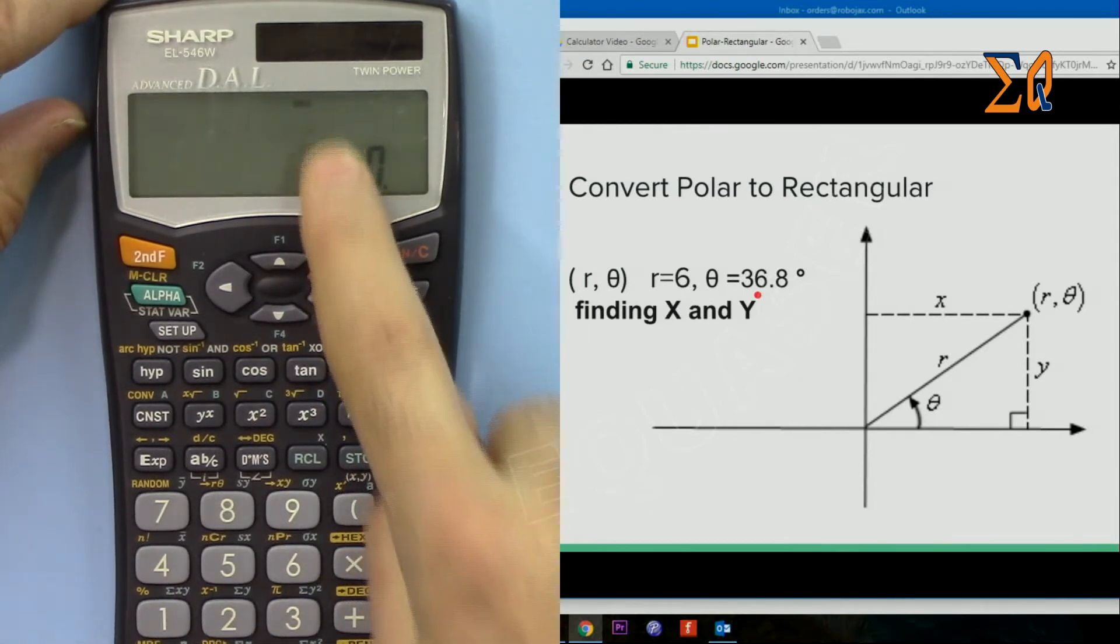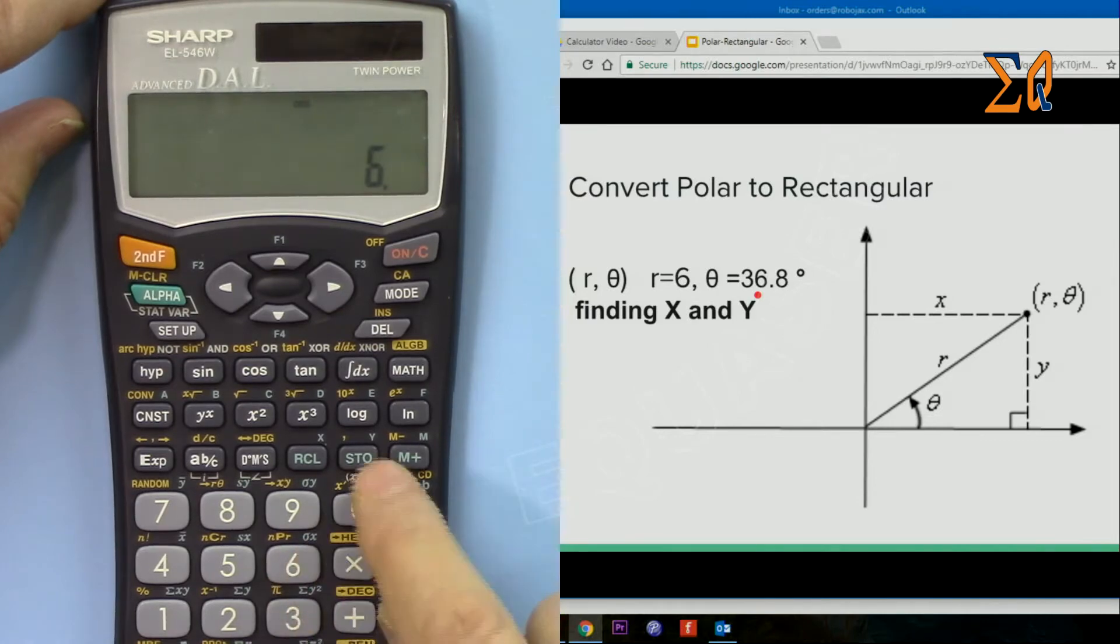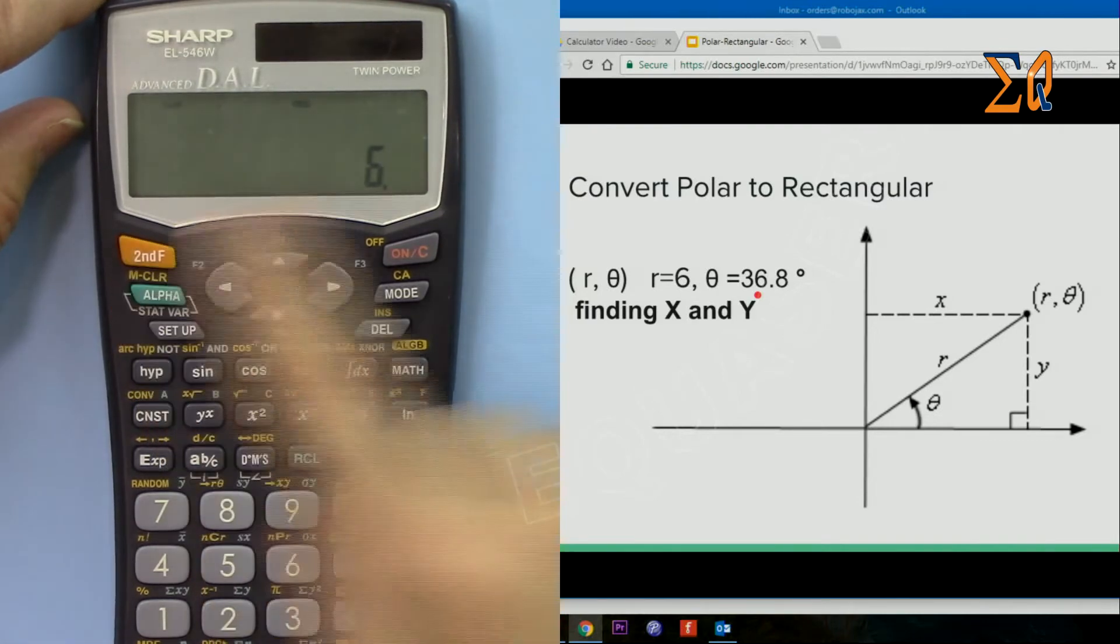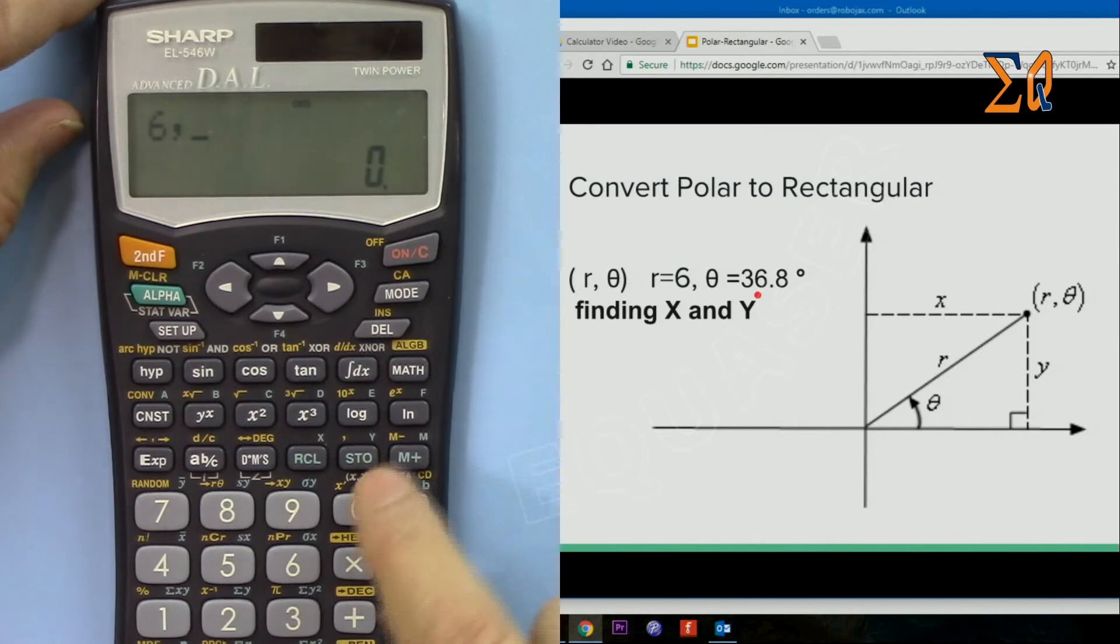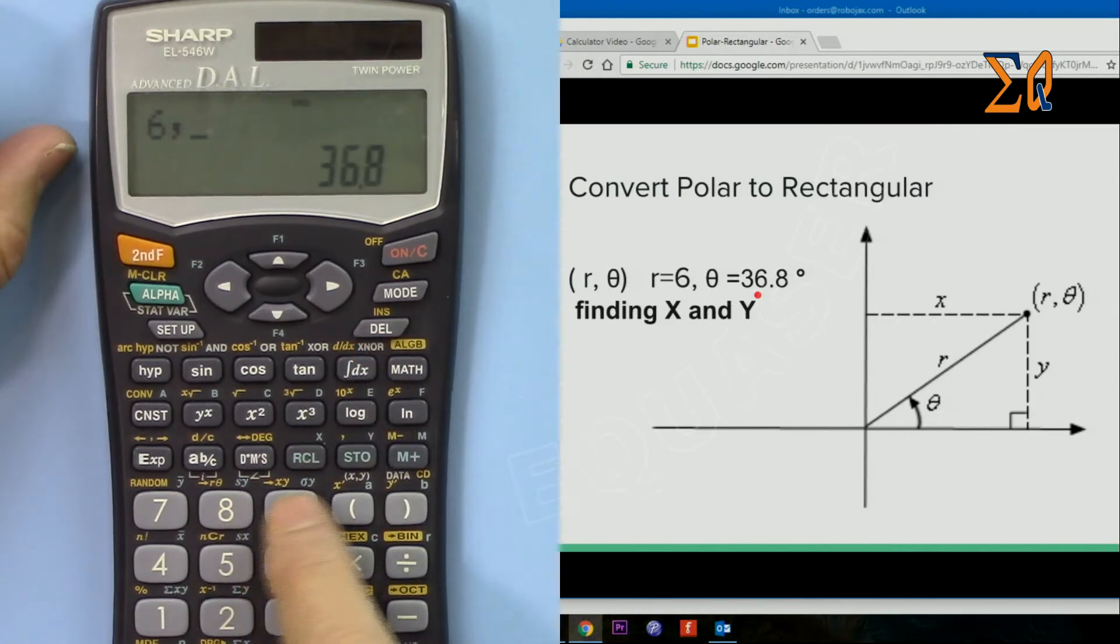Then now press 6, and then for comma, for a second function with STO, this is a comma, and then 36.8. After that, because we want it in rectangular with X Y, so second function 9.